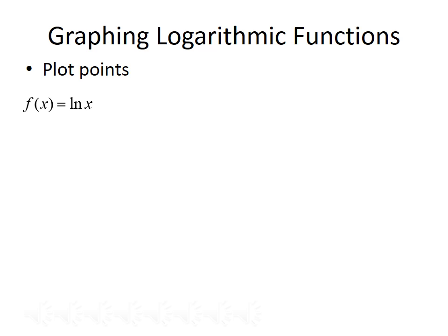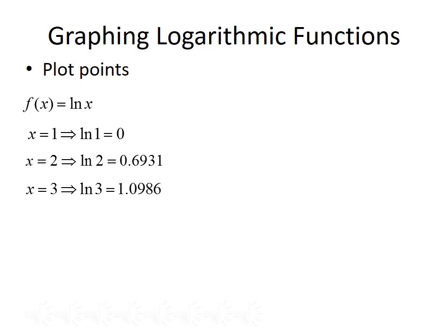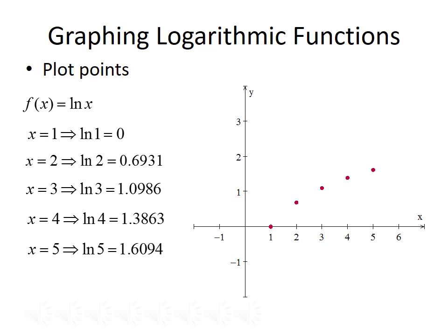Next we'll talk about graphing logarithmic functions. The easiest way right now is to plot points. For f of x equals the natural log of x, we pick several positive x values: at x equals 1, ln(1) equals 0; x equals 2 gives 0.6931; x equals 3 gives 1.0986; x equals 4 gives 1.3863; x equals 5 gives 1.6094. We plot these points on a coordinate axis and draw a curve through them to get the graph of f of x equals the natural log of x.